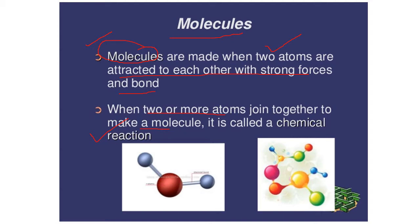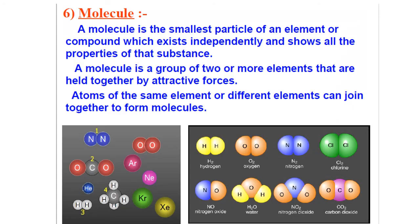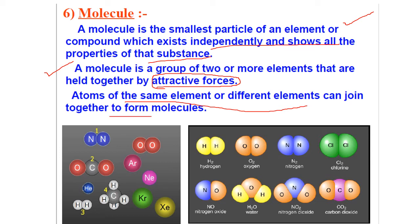How is a molecule formed from atoms? By chemical reaction. You can see one atom and another atom — these two combine together to form a molecule. A molecule is the smallest particle of an element or a compound which exists independently and shows all the properties of that substance. A molecule is a group of two or more atoms that are held together by attractive forces, and atoms of the same element or different elements join together to form molecules.